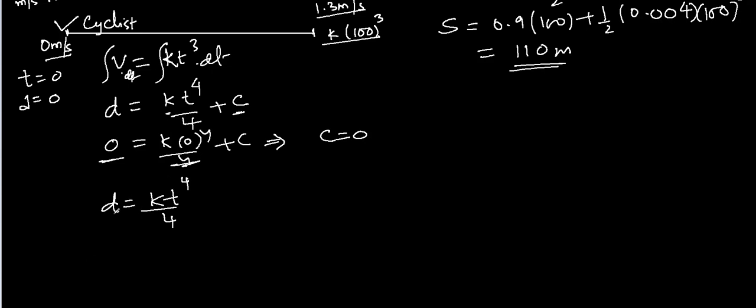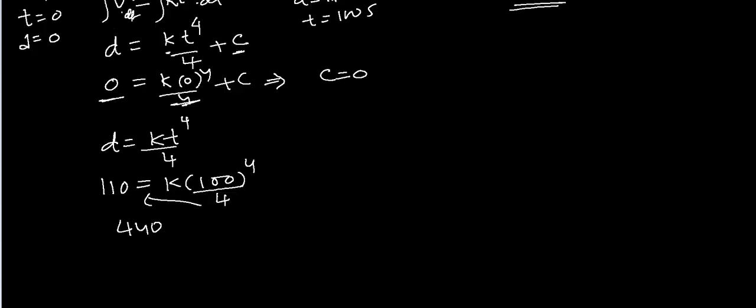Now we want to find K, and for that we can substitute this situation that after 100 seconds, 110 meters. Time was 100 seconds. So I can find K with the help of this fact now. 110 equal to K times 100 to the power 4 over 4, and cross multiply. 4 will multiply here so 440, and 100 to the power 4 will be 10 to the power 8 will be the denominator on the other side. This is the value of K.